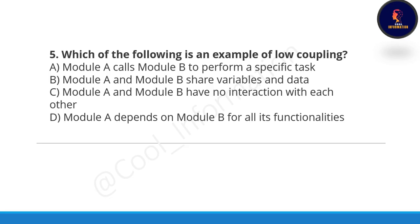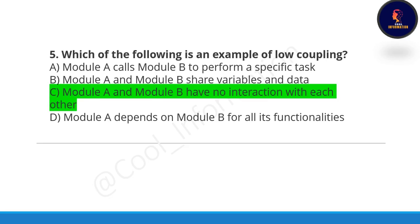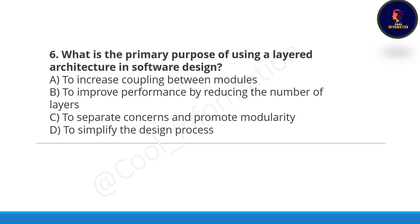Next question: which of the following is an example of low coupling? Option C is actually the example of low coupling, in which modules A and module B have no interaction with each other. So it is actually a low coupling example.